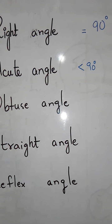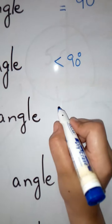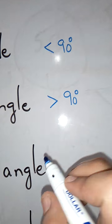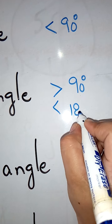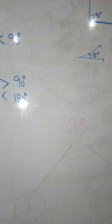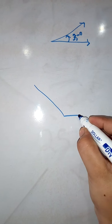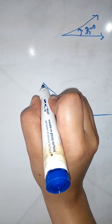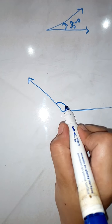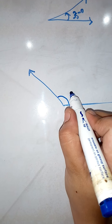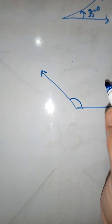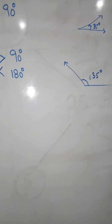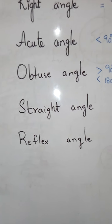The next one is the obtuse angle. An obtuse angle is always greater than 90 degrees but less than 180 degrees. Its figure is wider than a right angle. For example, you can draw 135 degrees, 160 degrees, and so on.